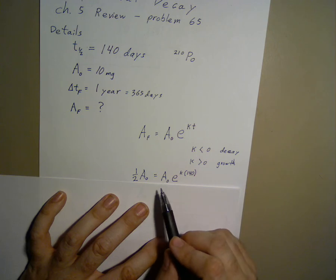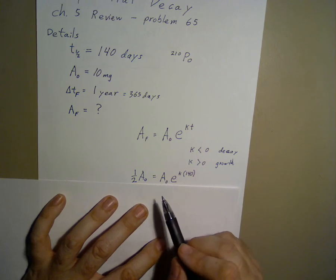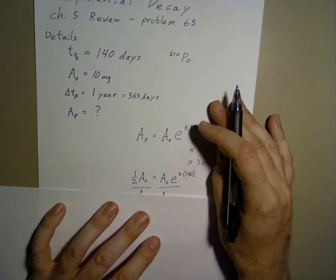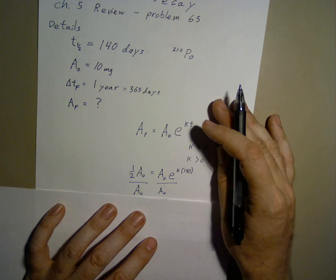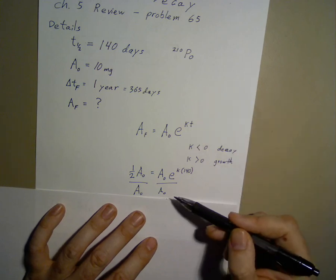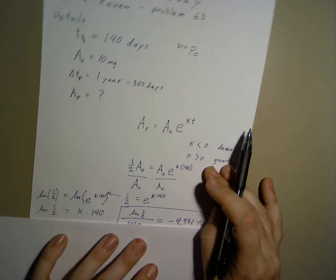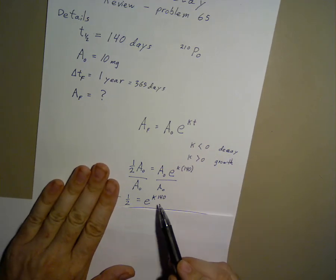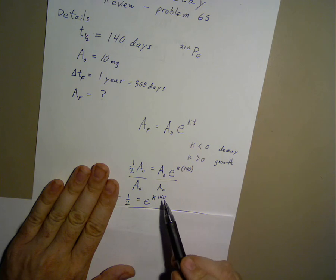What half-life means is that after that amount of time, we have half of the original material left. So if I divide both sides by a-naught, then we get one-half equals e to the power of k times 140.